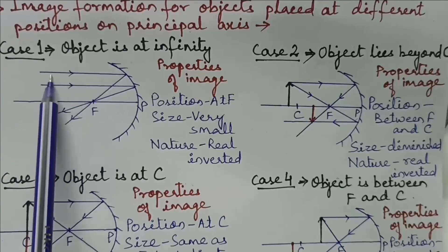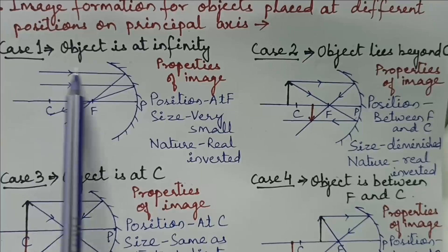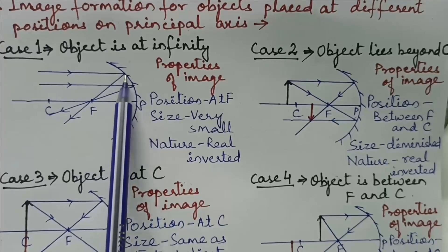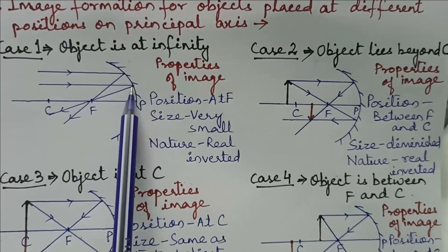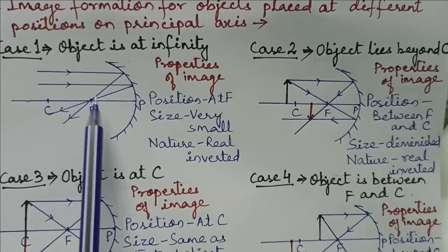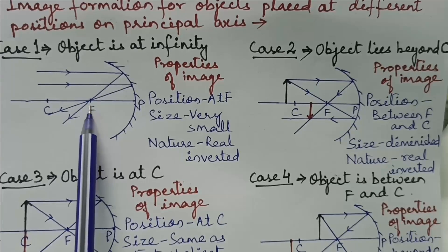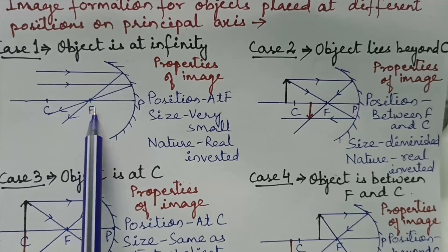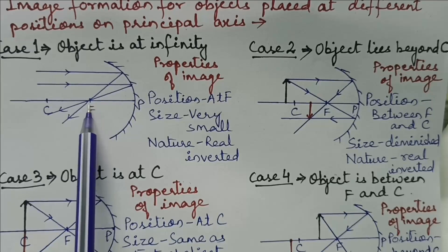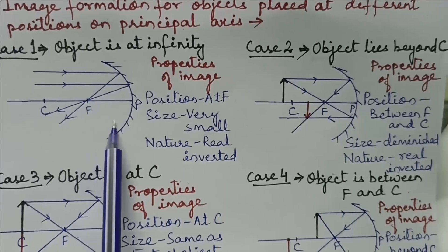Case 1: When the object is at infinity. The first ray and the second ray coming parallel to the principal axis after reflection from the surface of mirror pass through focus. So the image is formed at focus. The size of image is very small and the nature is real and inverted.